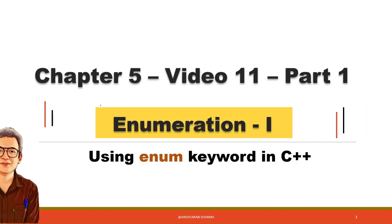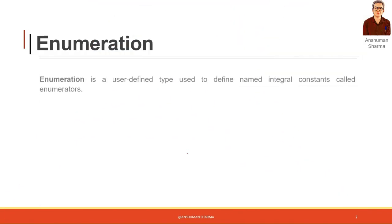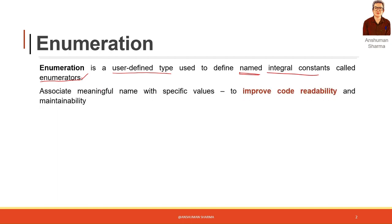Let's start with enumeration in C++ and how it is created using the enum keyword. Enumerations are used for creating user-defined data types — specifically, a data type used to define named integral constants. These integral constants have underlying integral values but are provided a name, and these named integral constants are called enumerators. They help to associate meaningful names with specific values.